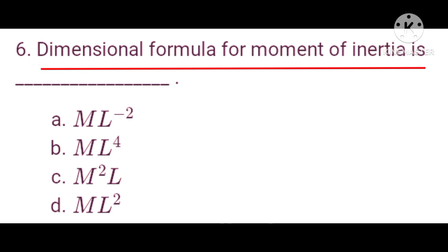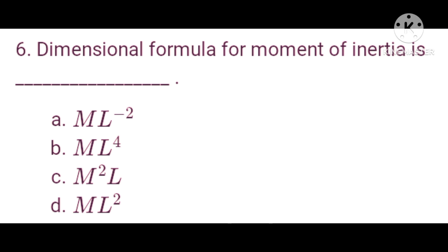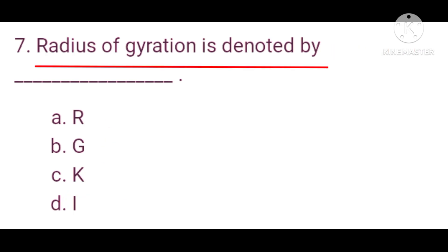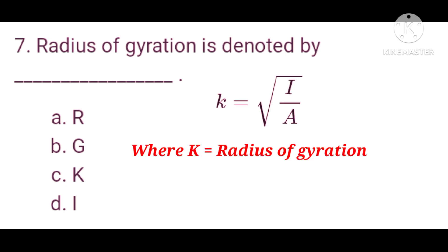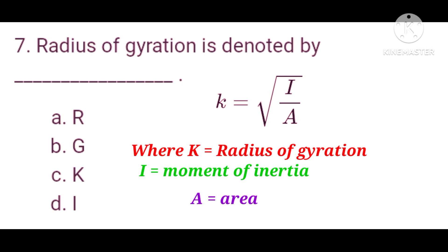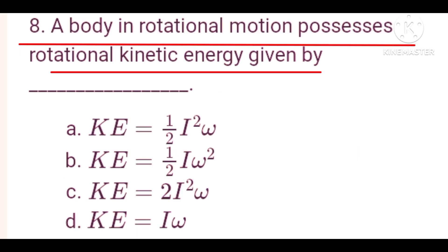Question number six: the dimensional formula for moment of inertia is ML². Option D is the correct answer. Question number seven: radius of gyration is denoted by K. The expression for radius of gyration is K equals the square root of I over A, where K is the radius of gyration, I is the moment of inertia, and A is the area. Option C is the correct answer.